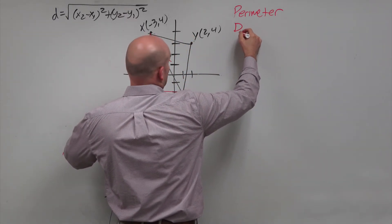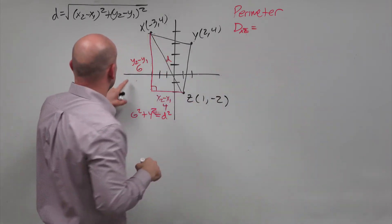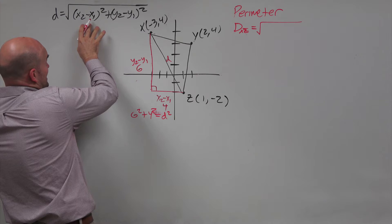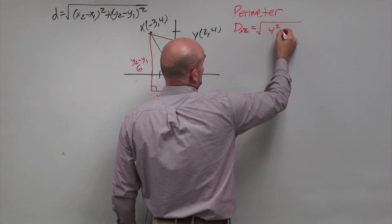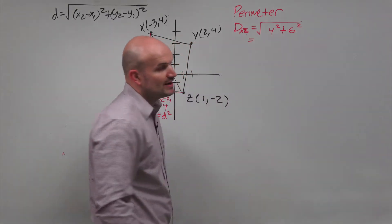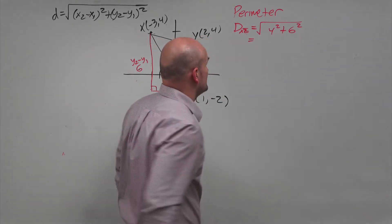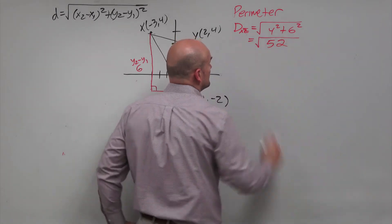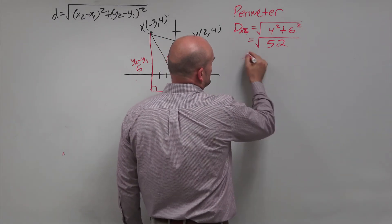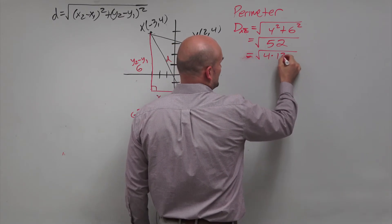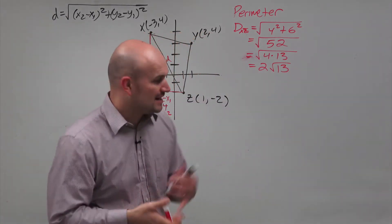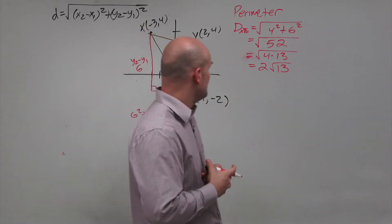For the perimeter, I'm going to label my distance xz. That's simply rewritten as the square root of 4 squared plus 6 squared — the horizontal distance squared and the vertical distance squared. So 4 squared gives me 16, and 6 squared gives me 36, which will give me 52. We can simplify the radical: the square root of 52 can be broken up into the square root of 4 times 13, which can be rewritten as 2 radical 13.